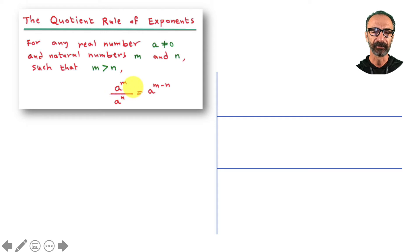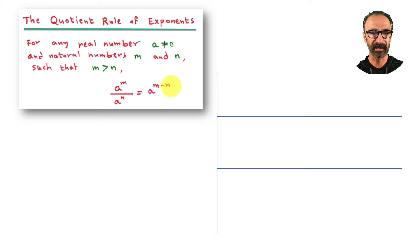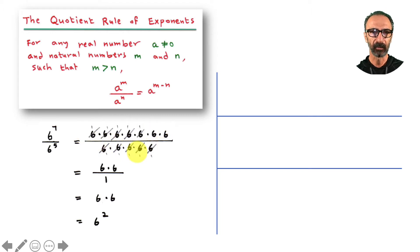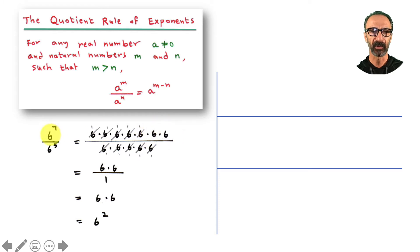Now the quotient rule: when you divide powers with the same base, you subtract the exponents. In the product rule we add; in the quotient rule we subtract. Same base — seven minus five gives you two. To visualize: I have seven sixes on top, five sixes on the bottom. Simplifying, I end up with two on top because I have two more here than here, so the answer is six to the second.